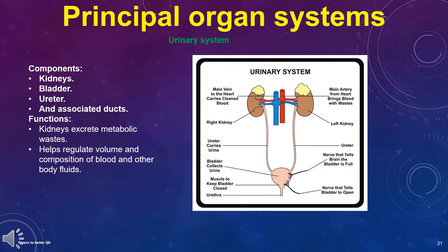The urinary system components are the kidneys, bladder, ureter, and associated ducts. Its functions are: kidneys excrete metabolic wastes, and helps regulate the volume and composition of blood and other body fluids.